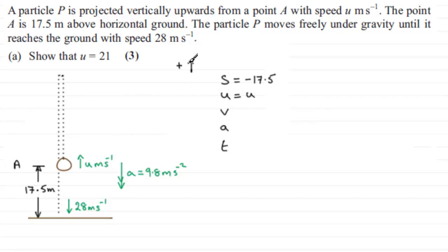v, the final velocity, is the 28, but it's acting downwards in the opposite sense to our positive direction, so we must say that this is minus 28.